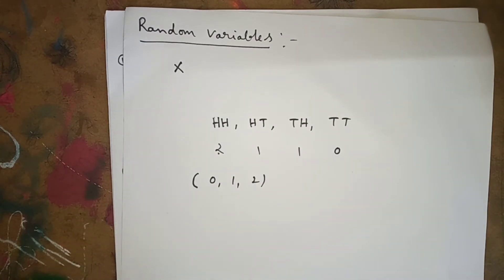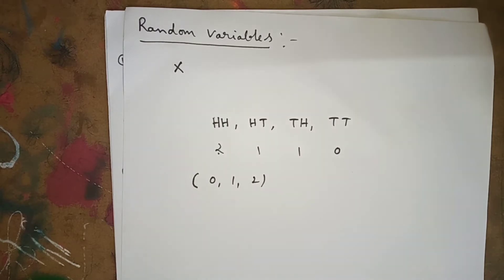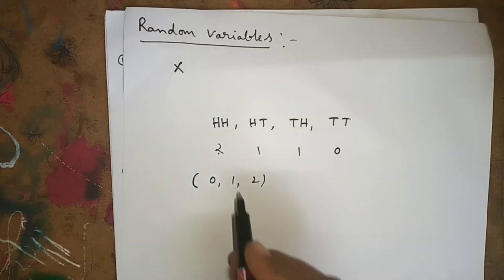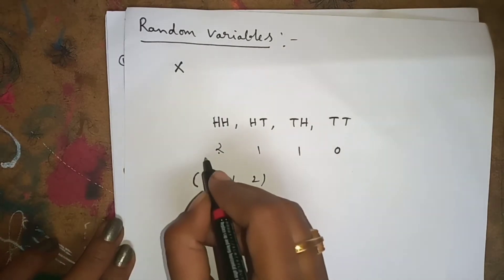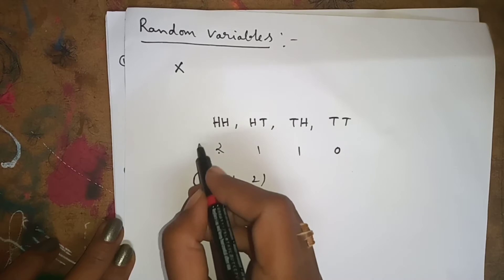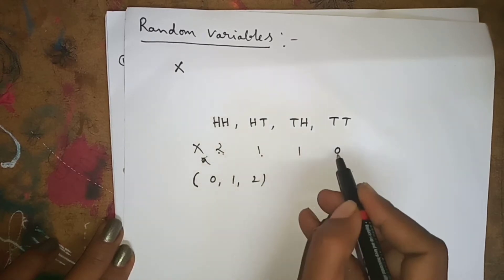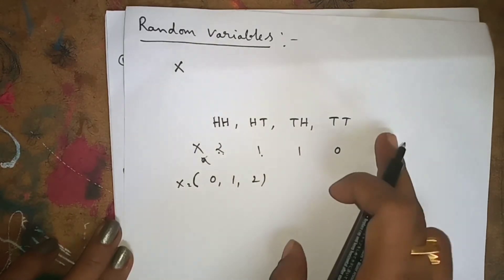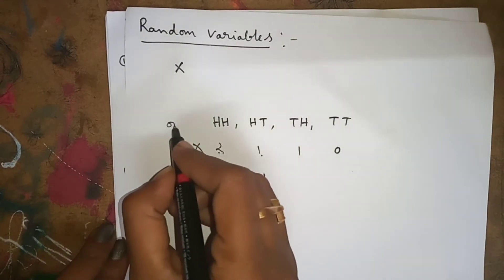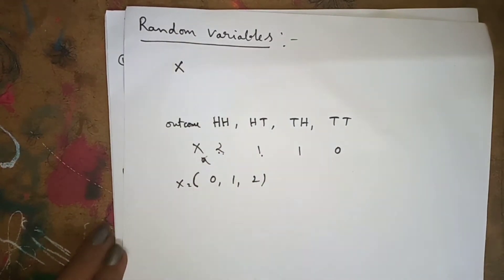A real variable X whose value is determined by the outcome of the random experiment is called a random variable. If you toss a coin twice, the random variable X is the number of heads. X takes the values: two heads, one head, one head, zero heads — therefore X equals zero, one, or two. You have to denote the random variable with capital X.